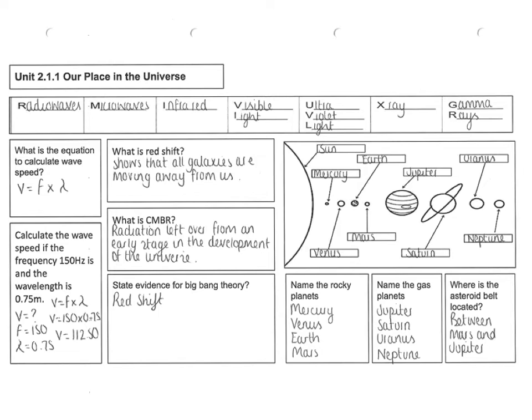Then we've got the solar systems. We've got to label it. We've got the sun, Mercury, Venus, Earth, Mars, Jupiter, Saturn, Uranus and Neptune.